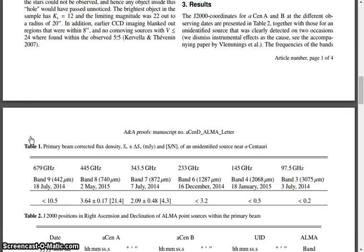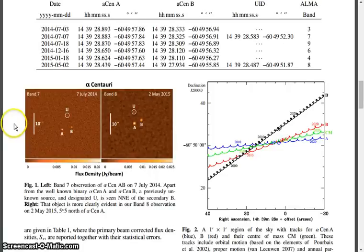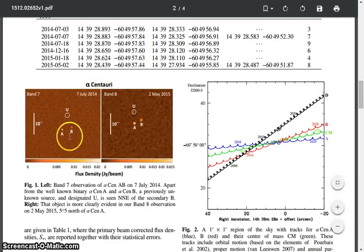I will put the link in the description box and you can read it for yourself. They actually observed Alpha Centauri's area that you can see in July 7, 2014. Then taken images from Alpha Centauri's A and B and object above this. On May 2, 2015, this object is moved left over Alpha Centauri's A.